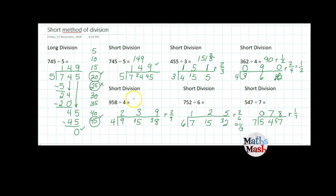Oops I have to write my answers in here. 239 and 2 quarters which is 239 and a half. 752 divided by 6 is going to be 125 remainder 1 third. And 547 divided by 7 is 78 and 1 seventh.